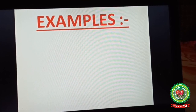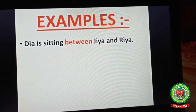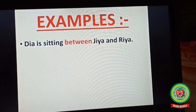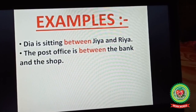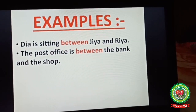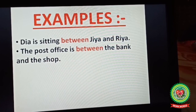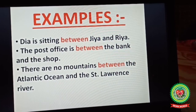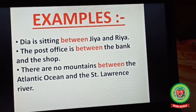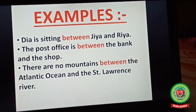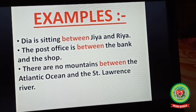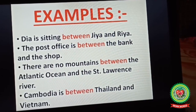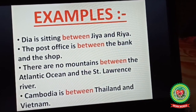More examples: 'Dia is sitting between Gia and Ria' — Dia is sitting between two girls, so we use between. 'The post office is between the bank and the shop' — the post office is between these two places. 'There are no mountains between the Atlantic Ocean and the St. Lawrence River' — these are two different places, so we use between. 'Cambodia is between Thailand and Vietnam' — Thailand and Vietnam are two different countries, so we use between here.